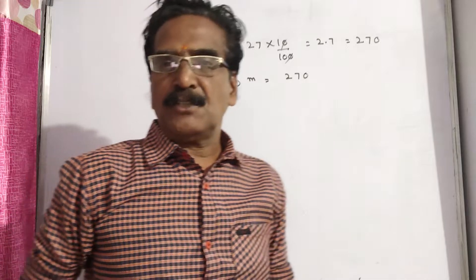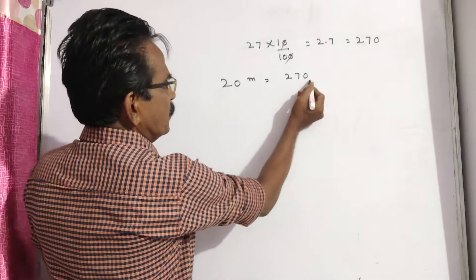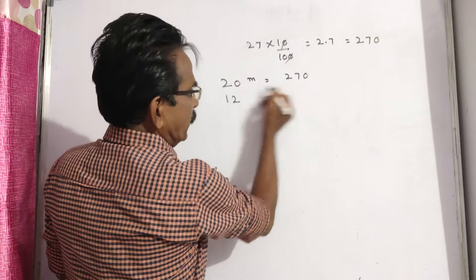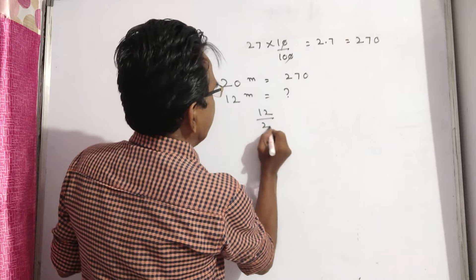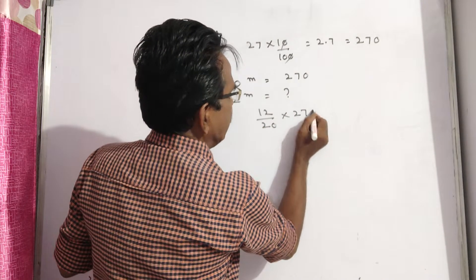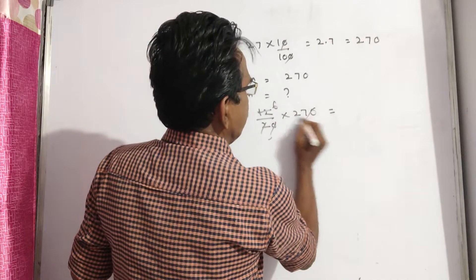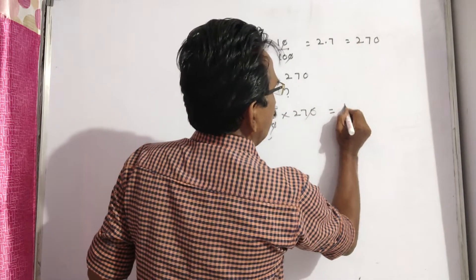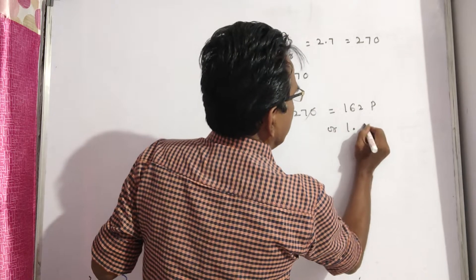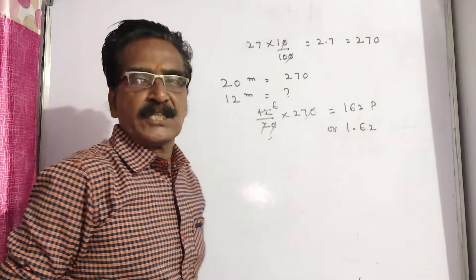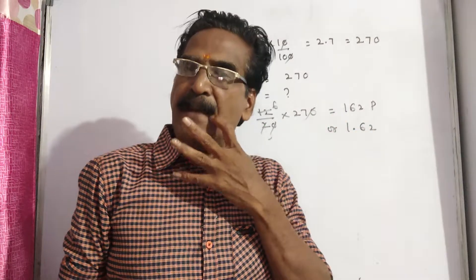Now we want the reduced price of 12 mangoes, that is a dozen mangoes. So 20 mangoes is equal to 270 pies. What is the cost of 12 mangoes? It is 12 by 20 into 270. The zeros get cancelled to 6s: 6 times 27 gives 120 plus 42, which is 162 pies, or 1.62 rupees. This is the reduced price of mangoes per dozen.